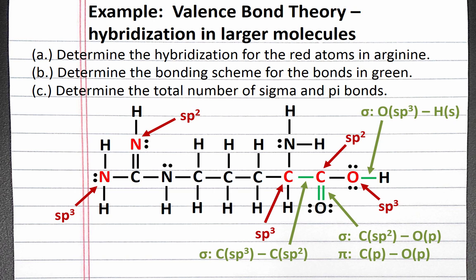For part c, we can determine the number of sigma bonds knowing that every bond — whether it's a single, double, or triple bond — has one sigma component. We have a total of 25 bonds, so we have 25 sigma bonds. Each double bond has one sigma component and one pi component, and each triple bond has one sigma and two pi components. We have a total of two double bonds in the molecule, so we have two pi bonds.